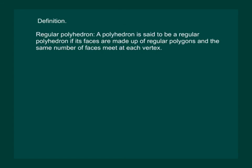Now let us define a regular polyhedron. A polyhedron is said to be a regular polyhedron if its faces are made up of regular polygons and the same number of faces meet at each vertex. Let us recollect the regular polygon. A regular polygon is a polygon whose all sides and all angles are equal.